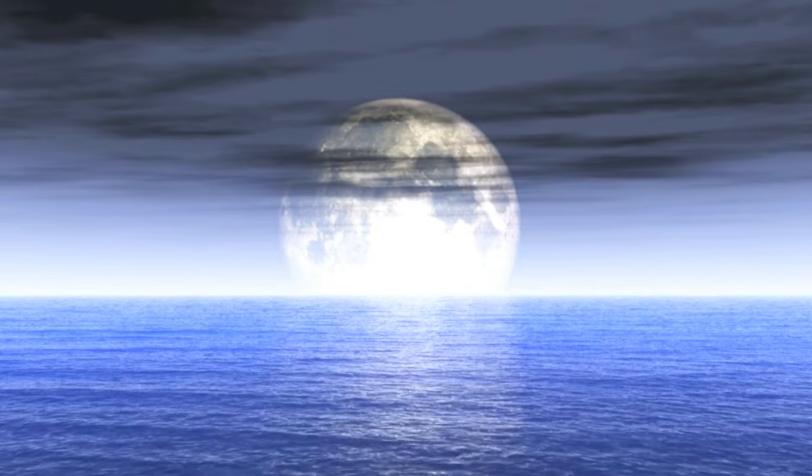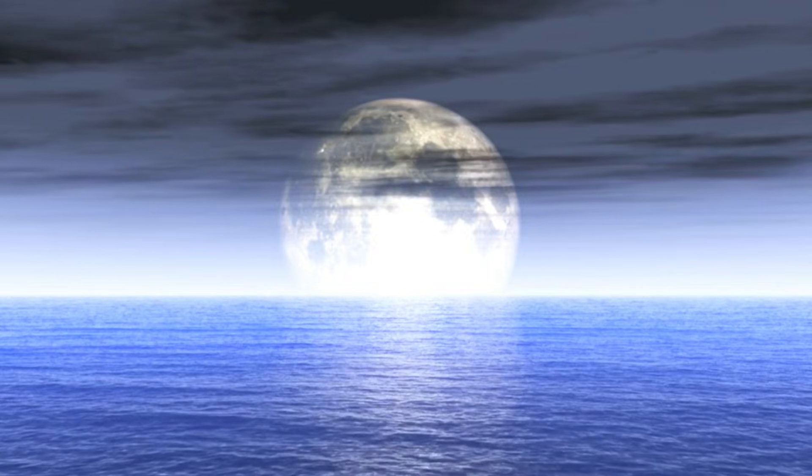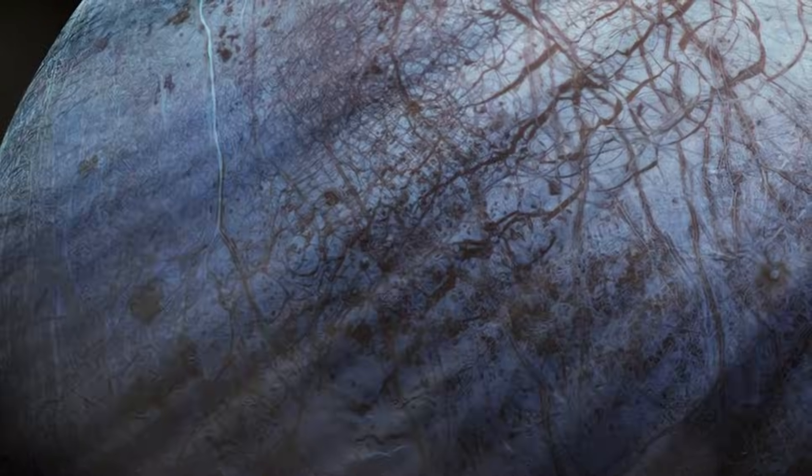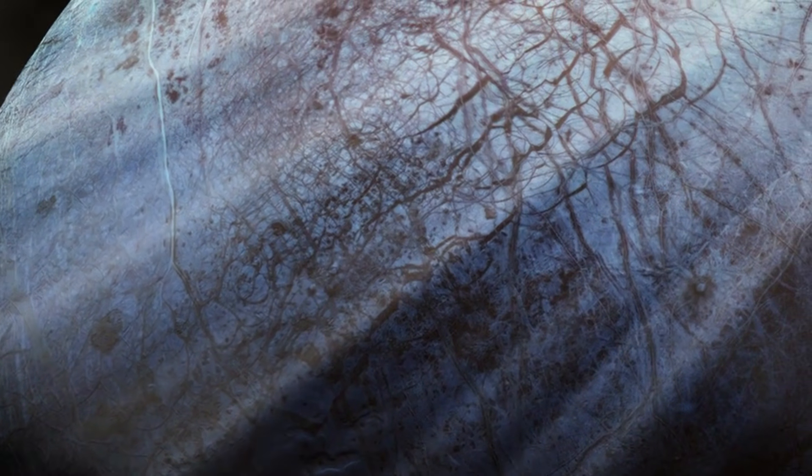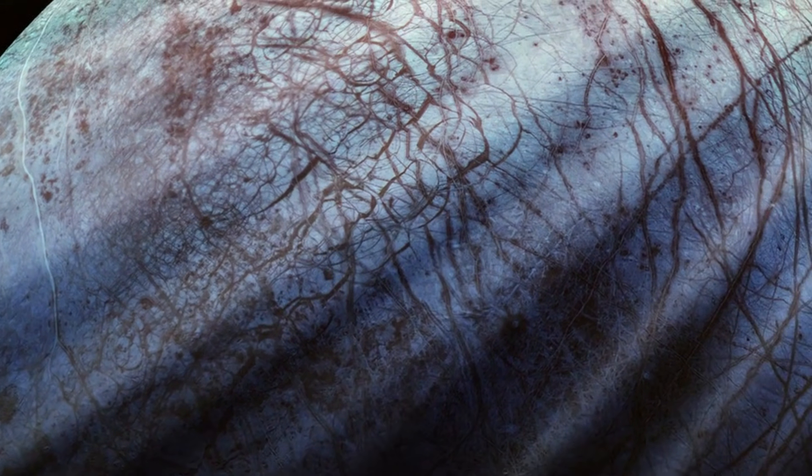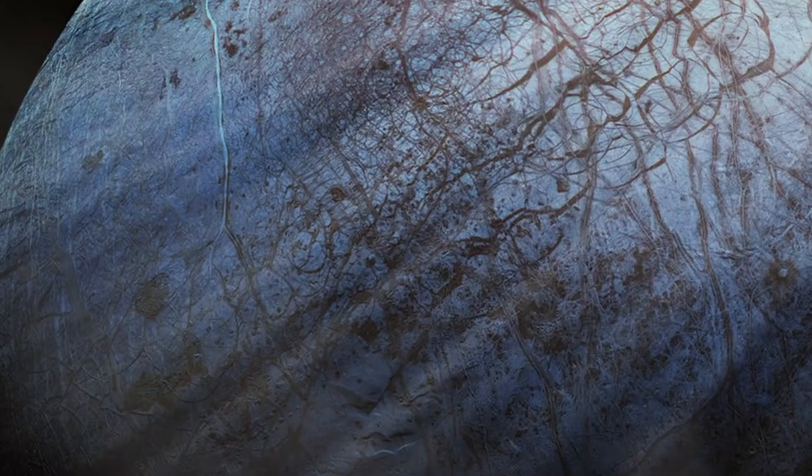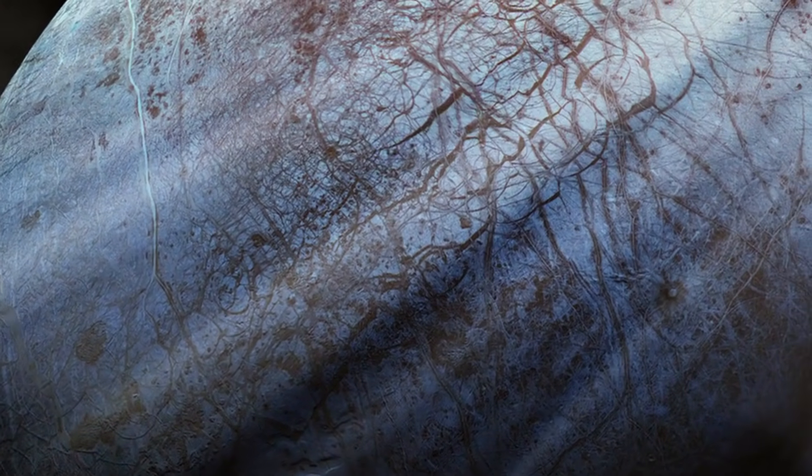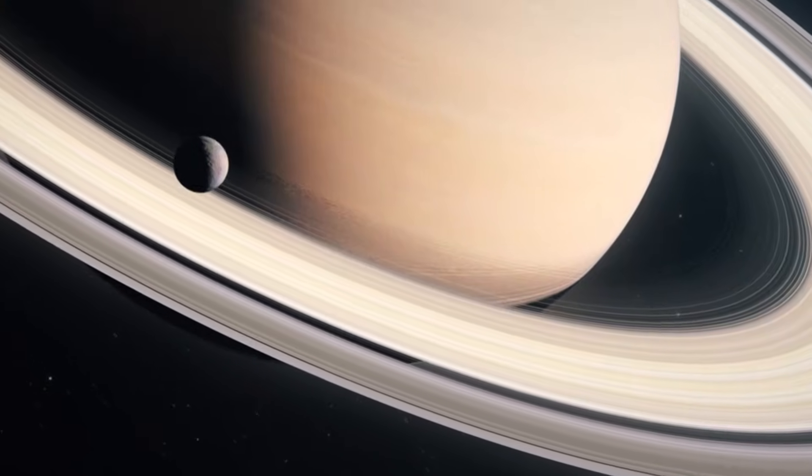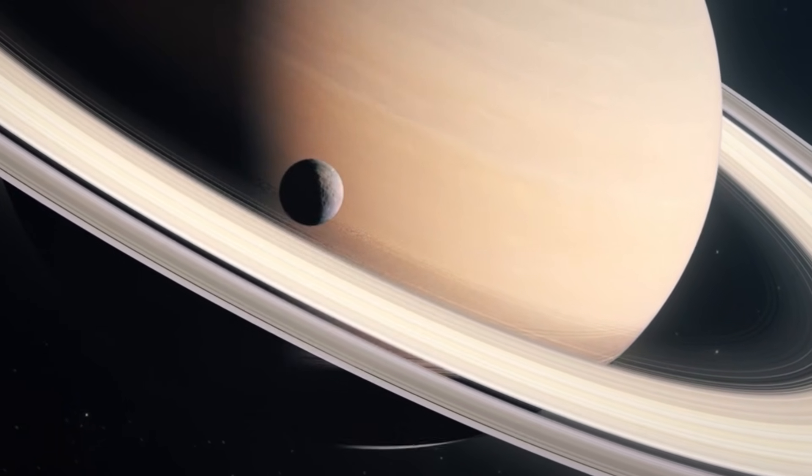Among Voyager 1's most intriguing findings are the icy moons Europa and Enceladus. Europa, one of Jupiter's largest moons, has long fascinated scientists due to the possibility of a subsurface ocean beneath its icy crust. Features such as cracks and ridges on Europa's surface suggest tectonic activity, potentially driven by Jupiter's gravitational forces. The presence of liquid water makes Europa a prime candidate in the search for extraterrestrial life. Similarly, Saturn's moon Enceladus has captured scientists' attention.